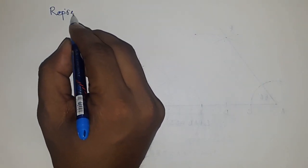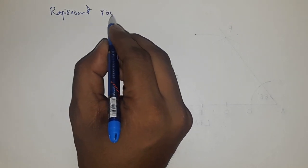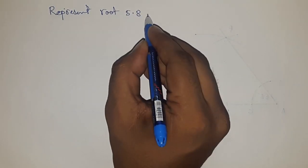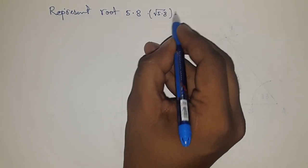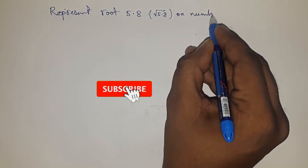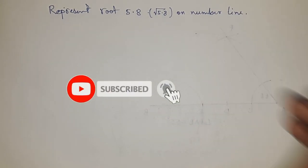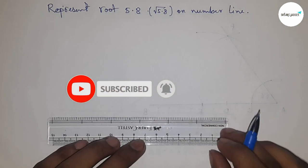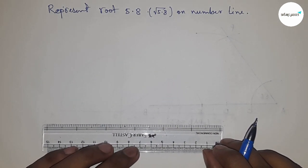Hi everyone, welcome to SSR Classes. Today we're talking about the representation of root 5.8 on the number line. Before starting the video, please subscribe to the channel and press the bell icon for future video notifications.